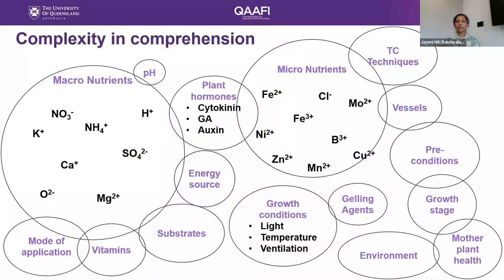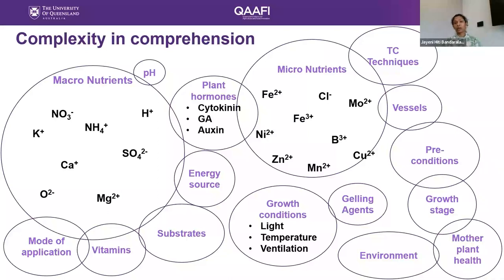Tissue culture sometimes sounds very simple, but this is what we have to deal with. We are going to communicate with little plant tissue, which doesn't understand my language. So I have to talk to plant tissues through a different language — the tissue culture language — which involves so many different variables: micronutrients, macronutrients, plant hormones, energy sources, different substrates during the rooting stage. We communicate with the plant to produce a little bud or throw out a root by changing all these conditions inside and outside of a vessel.